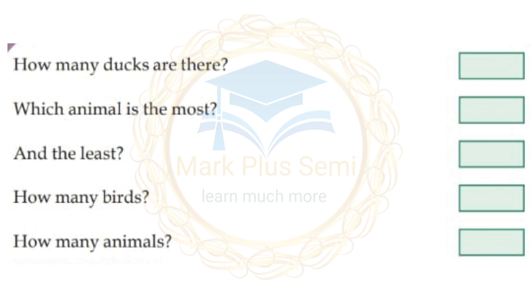How many birds are there? Birds include hen and duck. There are 3 hens and 2 ducks. So 3 plus 2 is equal to 5 — there are 5 birds total.